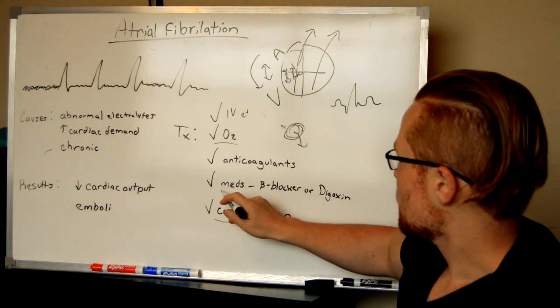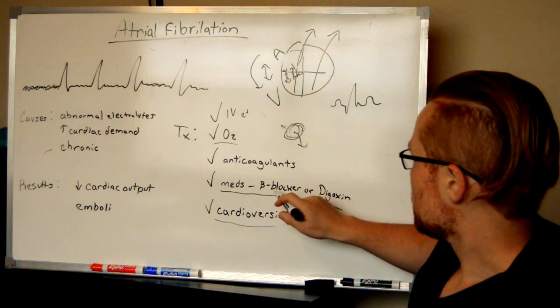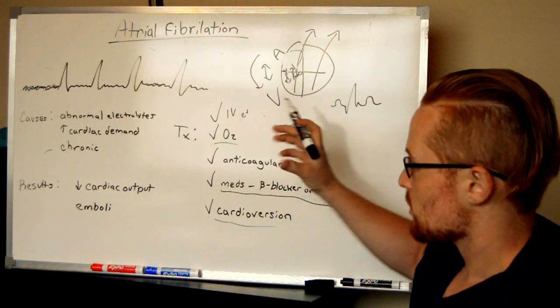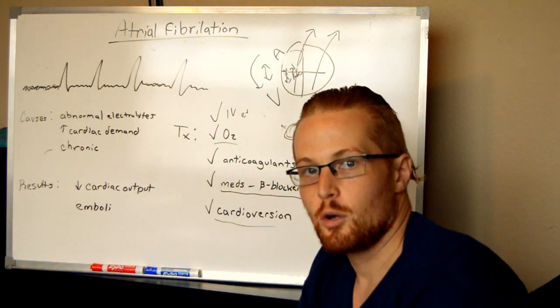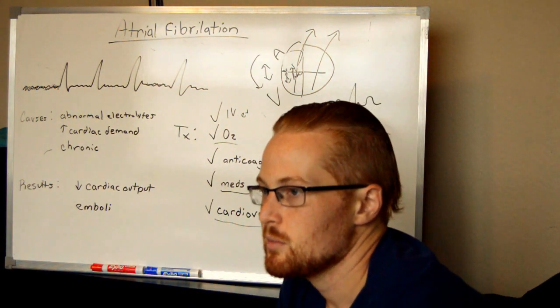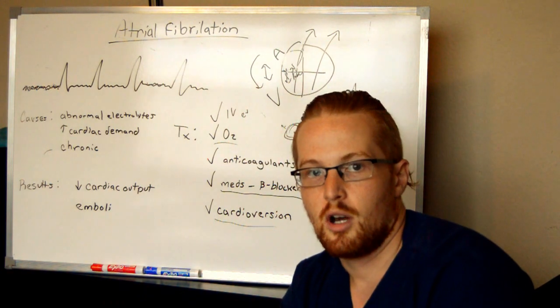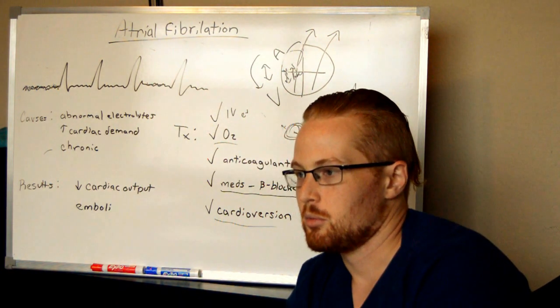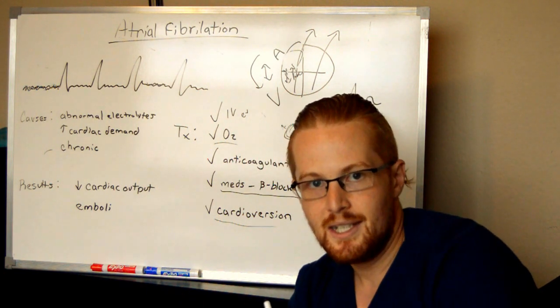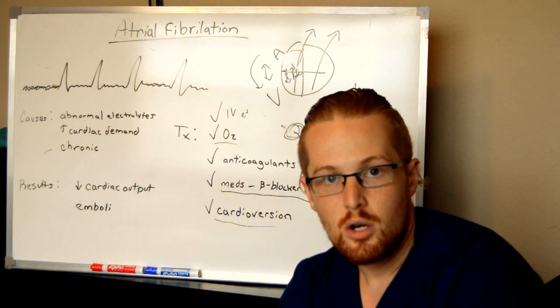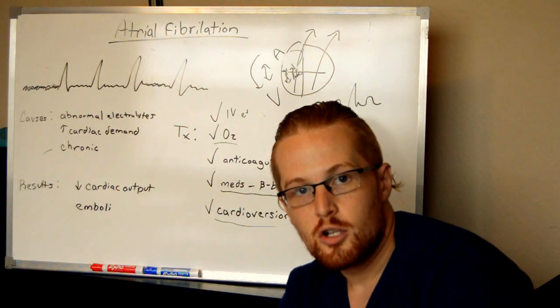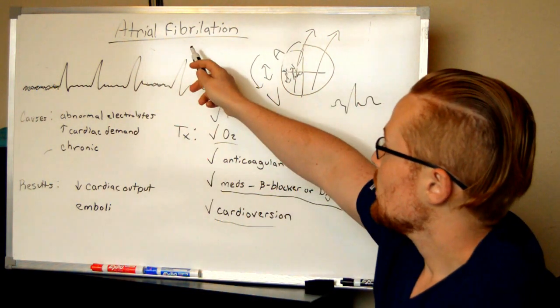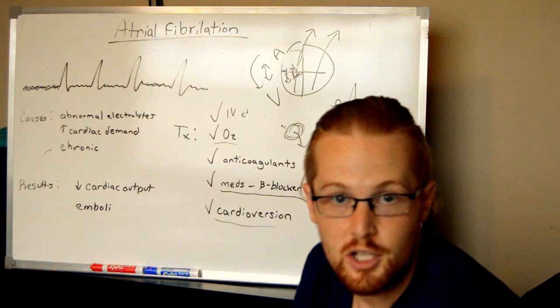But most of the time, you can give them medications such as beta blockers or digoxin, which decrease the heart rate. One thing to know about beta blockers is sometimes you'll give a patient a low dose of a beta blocker, and you'll be looking at their heart rate and blood pressure, and you might say this patient doesn't really need a blood pressure pill. But it may be a low dose not to lower blood pressure, but to treat their chronic atrial fibrillation.